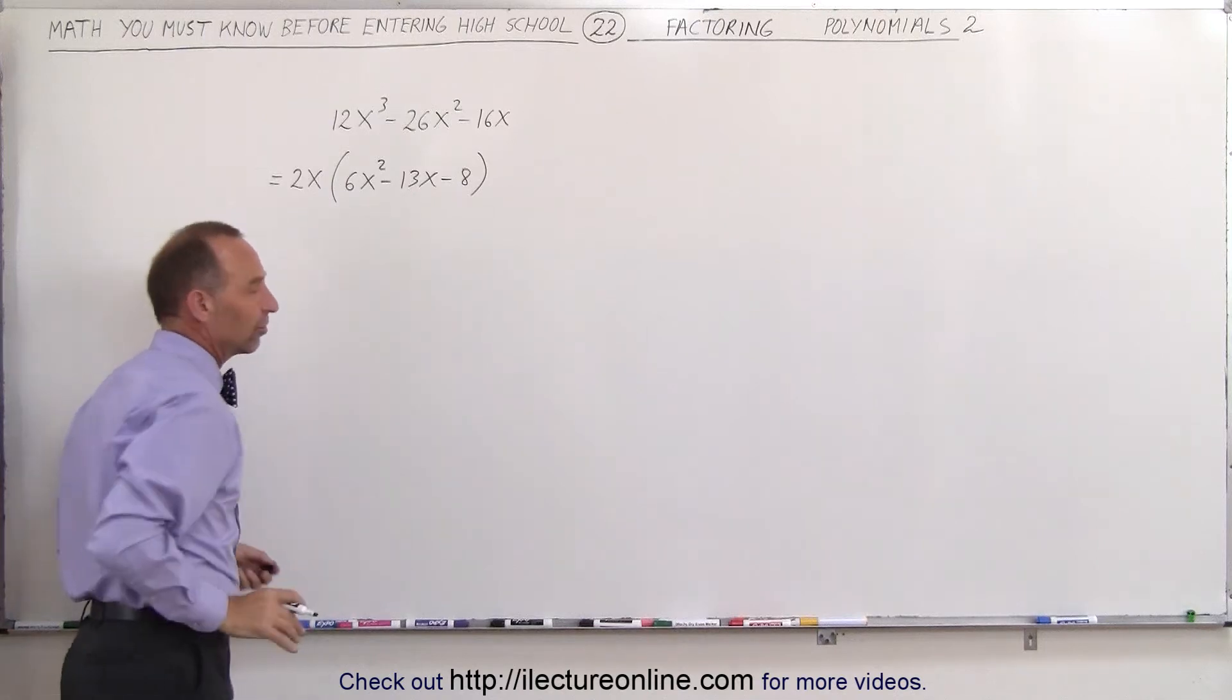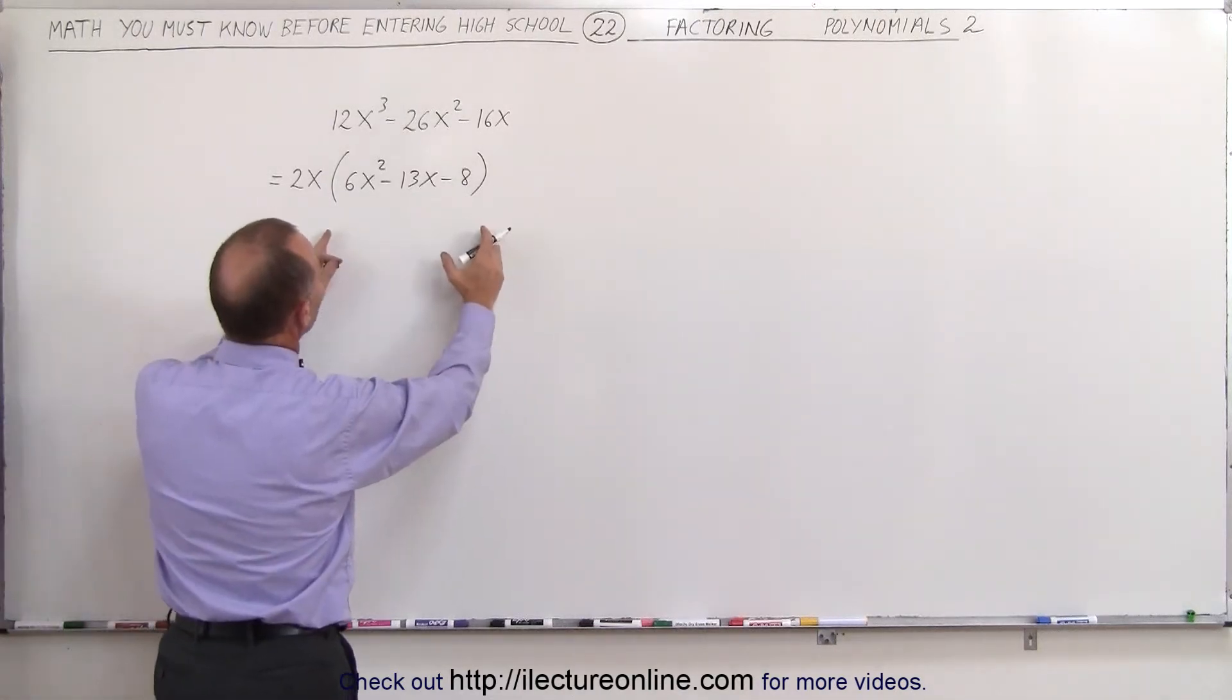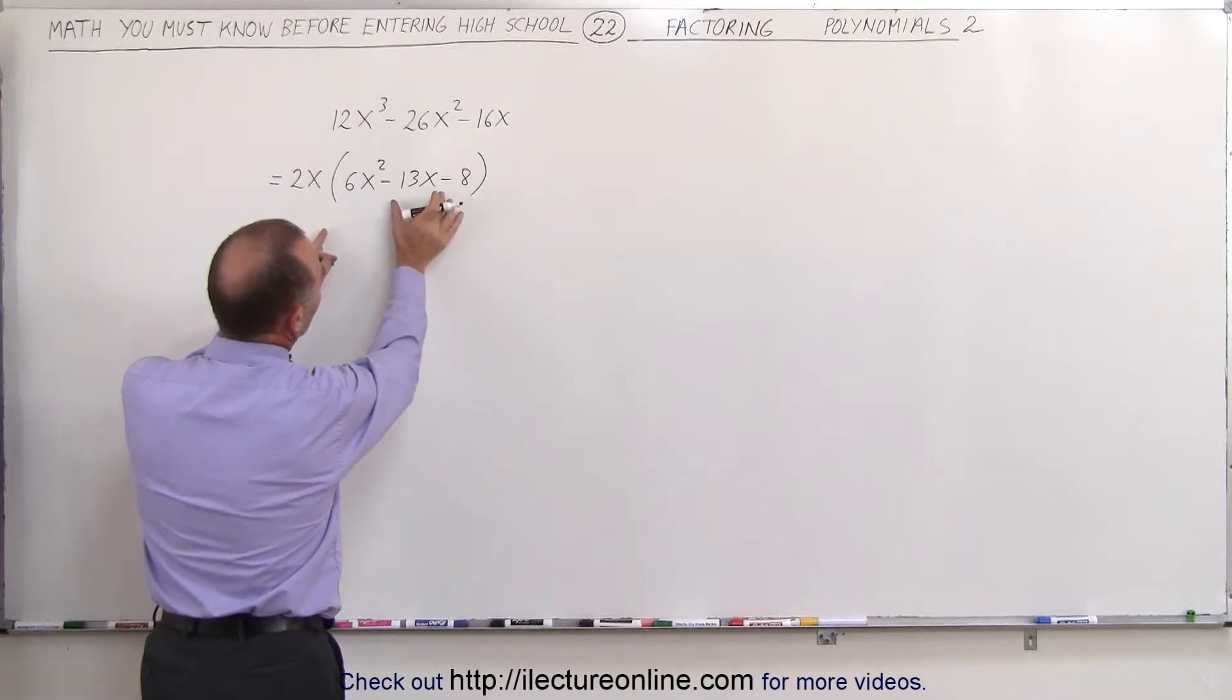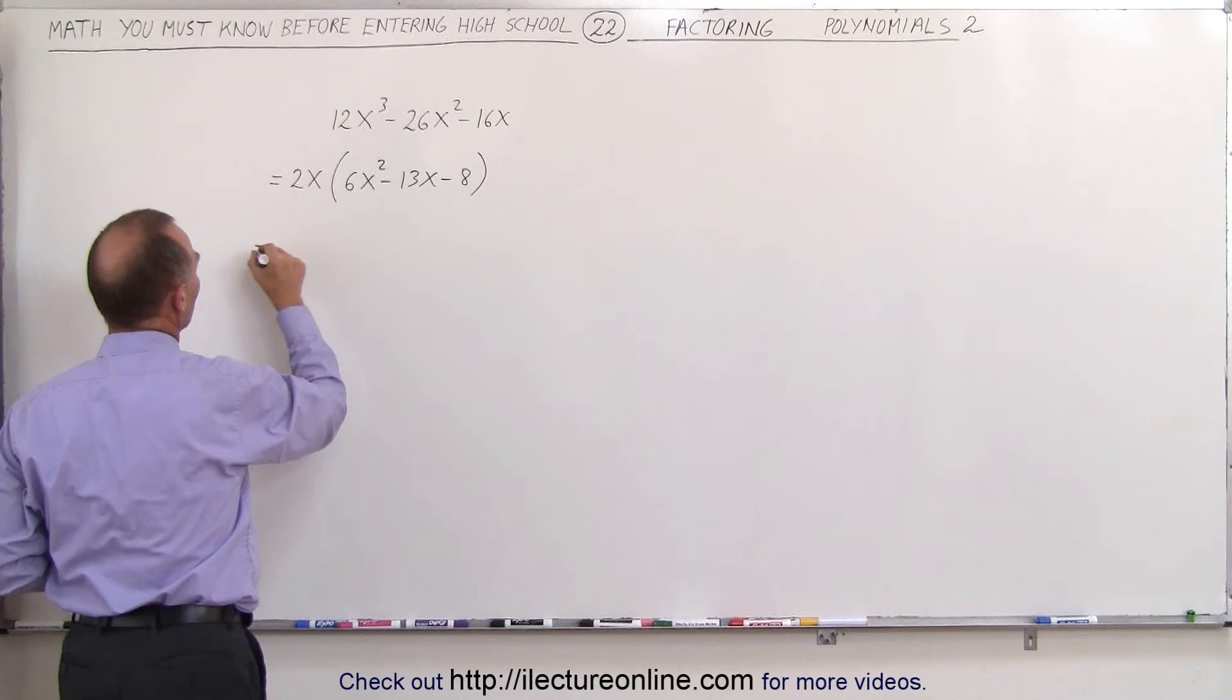Now we need to factor this. The technique to use there is to write this as a polynomial of four terms. We're going to take the middle term and write us two separate middle terms.